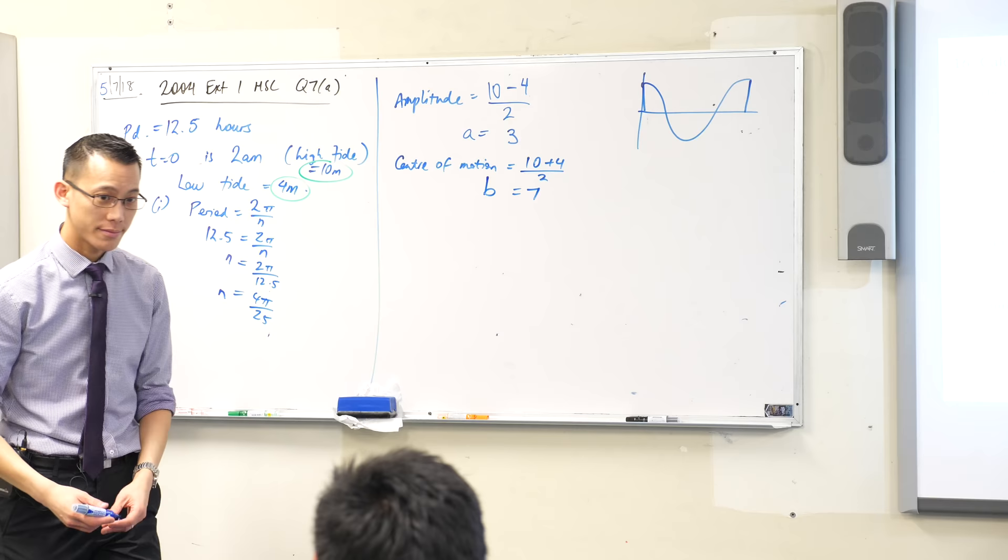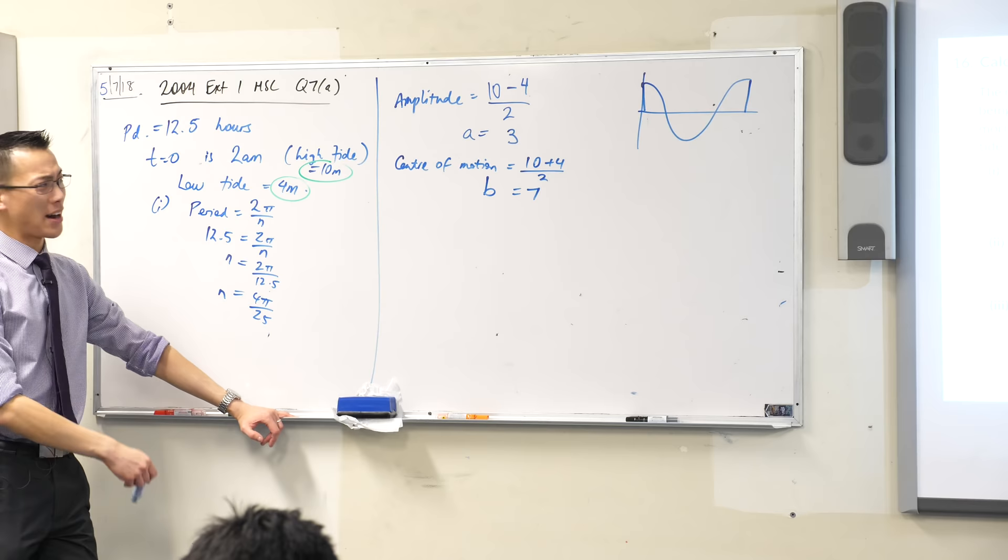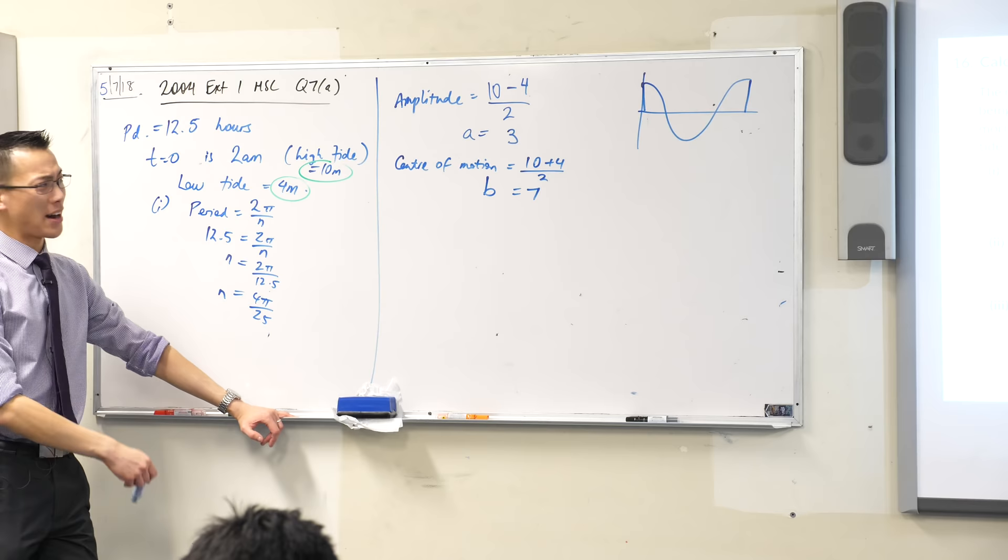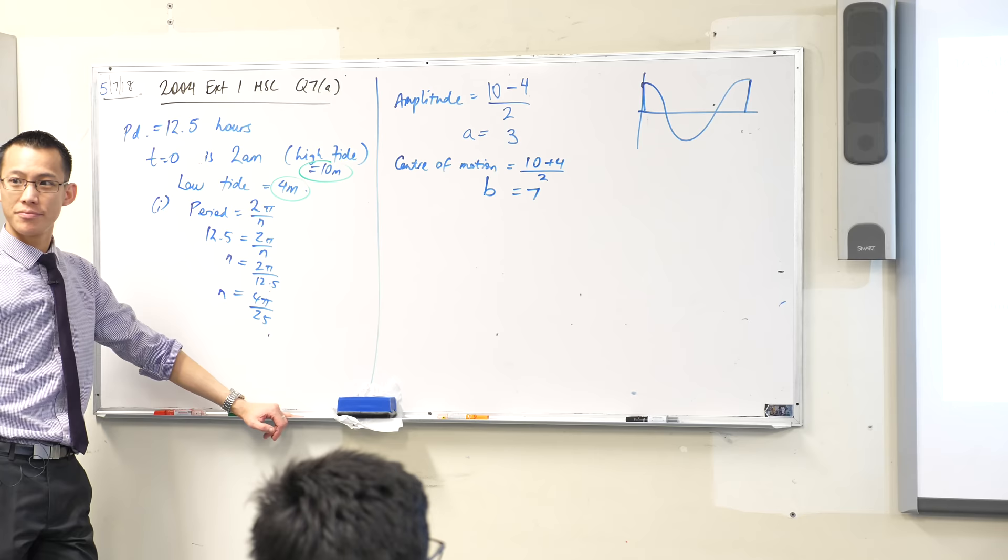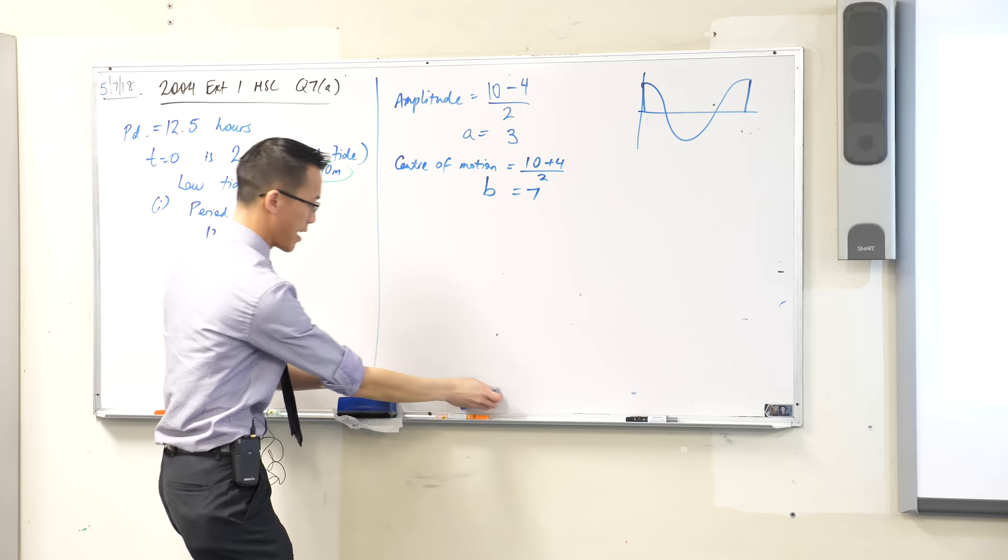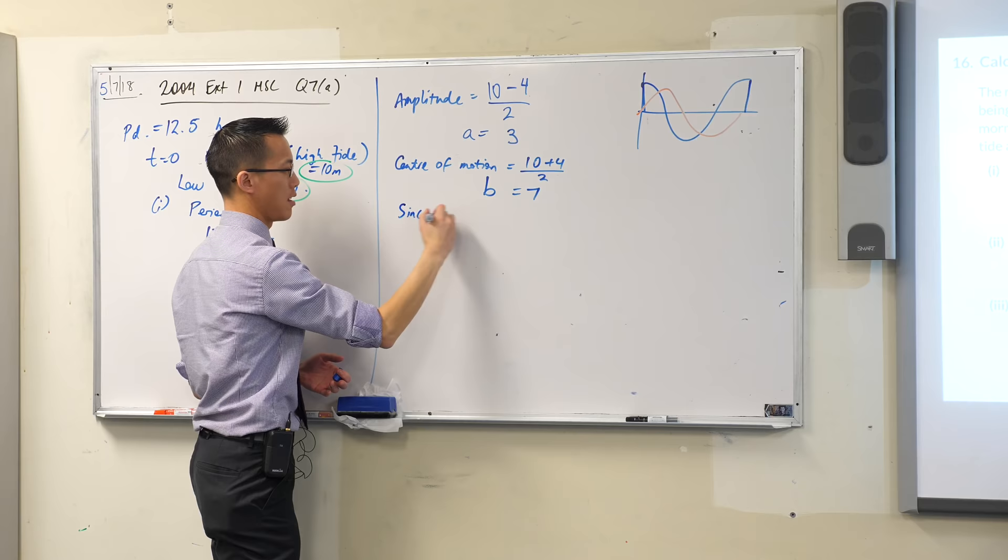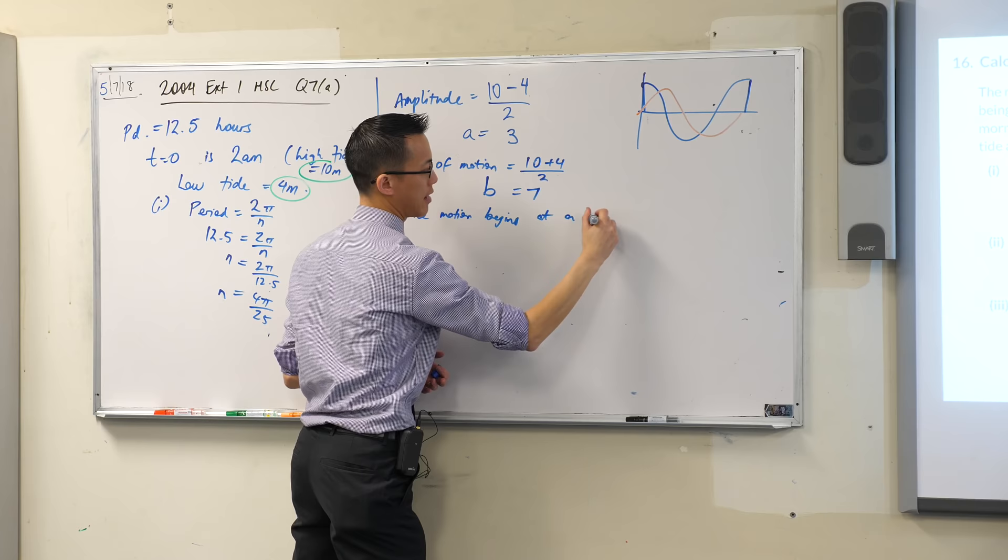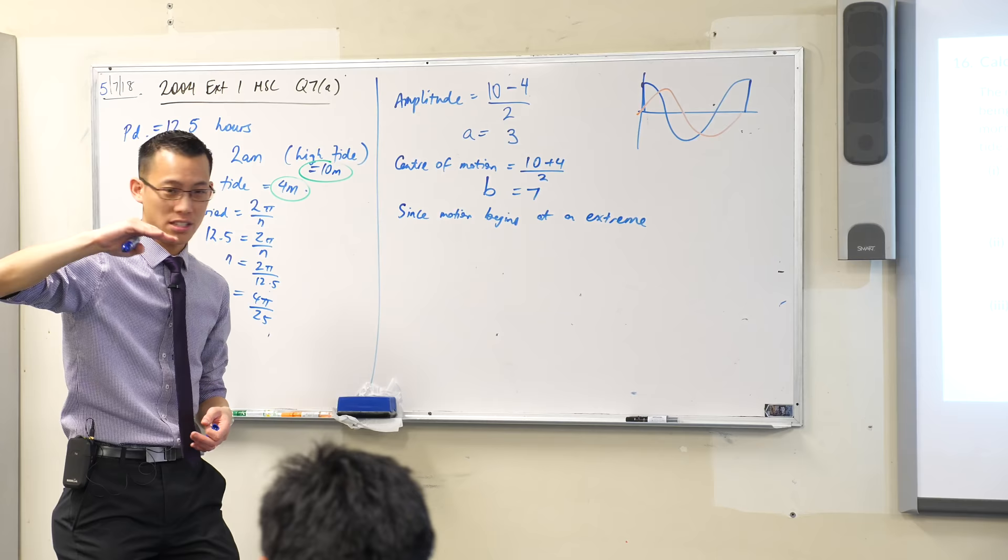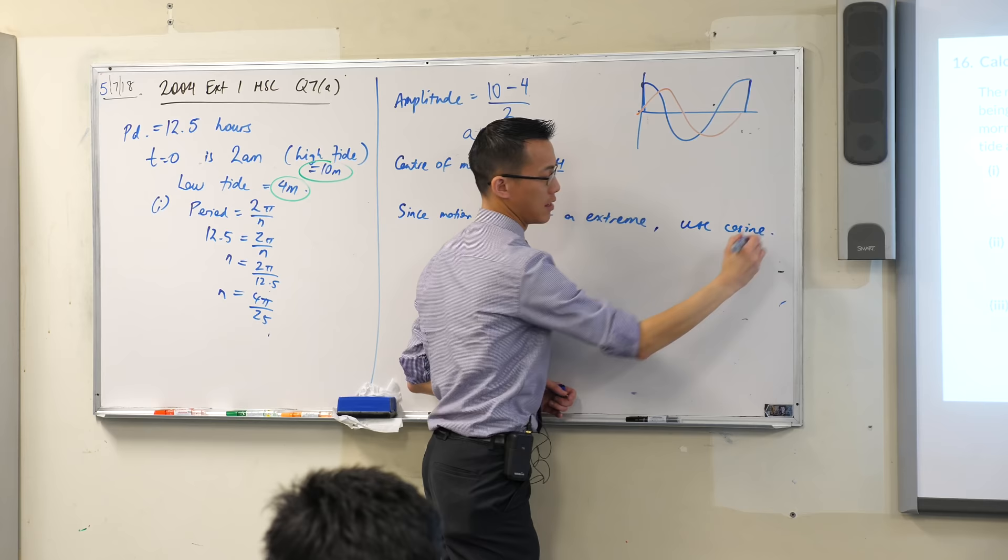This looks really good. I've got 4π/25, I've got 3, I've got 7. There's one last thing that they've given us that I haven't accounted for yet: cosine. Why is it cosine and not sine? Yeah, it starts at high tide. It starts at one of the extremes rather than starting - you have to draw this obviously - rather than starting at the center of motion. So I need to state that in some way because this is after all a show question. Right? So all I need to say is: since motion begins at an extreme, therefore it's not starting at the origin like sine does, it's going to start at one of the ends. I'm going to say use cosine. That's it. It's only two marks, we've done a lot of work already. They don't want us to labor this point, but they also don't want us to pluck it from thin air. It has to come from somewhere, some reason. Okay.